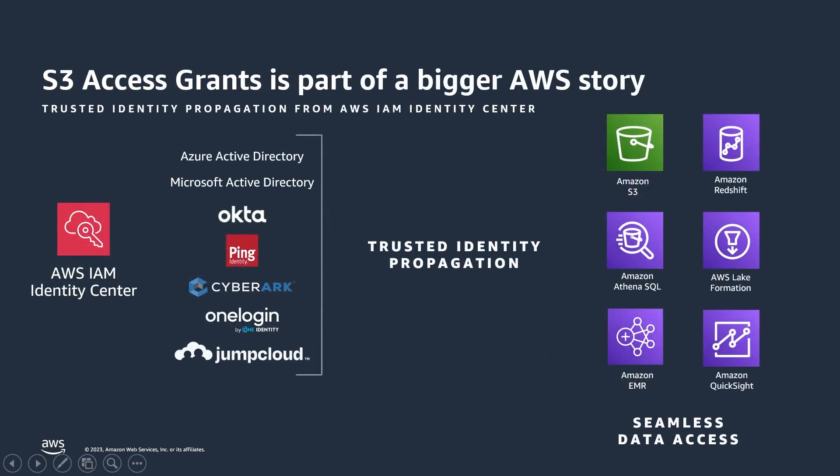One thing we want to mention is that S3 Access Grants is part of a bigger AWS story. We talk a lot about the directory identity aspect of S3 Access Grants, where you can define native S3 permissions using directory identities directly. The reason that capability works is because of AWS IAM Identity Center's trusted identity propagation feature. AWS IAM Identity Center allows you to have a single point of entry for your workforce identity to onboard to the AWS ecosystem. Once you onboard your external identity provider — whether it's Azure AD, Okta, Ping, or OneLogin — thereafter within the AWS ecosystem you can define S3 permissions, Redshift permissions, or Lake Formation permissions for Athena, all against those directory identities directly. That is a very powerful way to simplify your identity and access management.